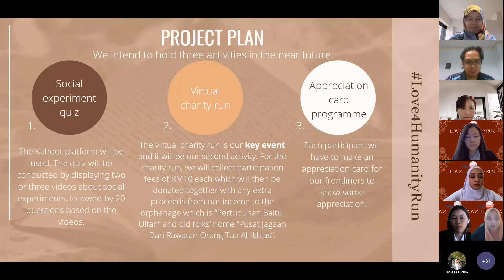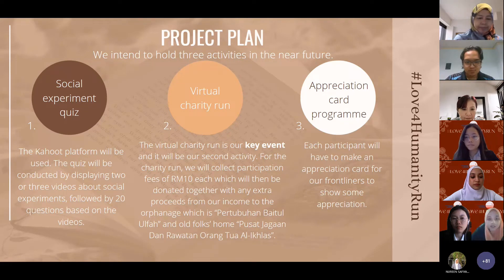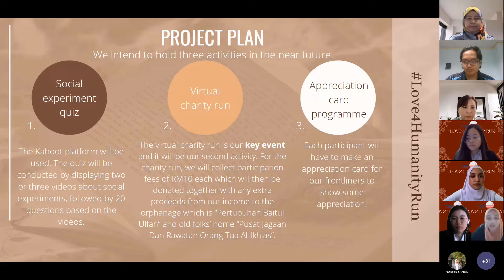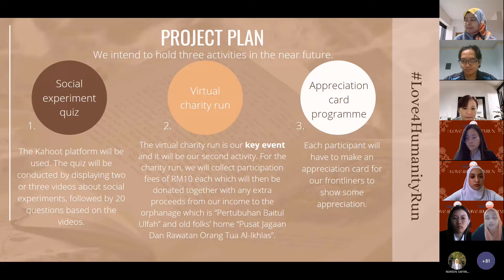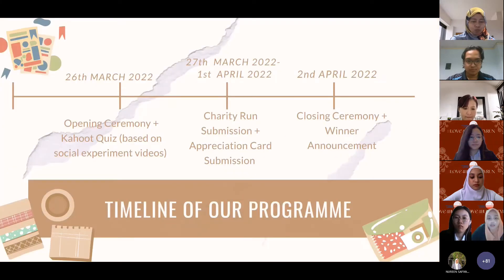Our project plan covers three activities. For the social experiment quiz, participants answer 20 Kahoot questions based on a video presented on that day. For the main program, the virtual charity run, the specific distance is five kilometers, where everyone who participates needs to pay RM10, and the money will be donated to Pertubuhan Baitul Ulfa, an orphanage, and Pusat Jagaan dan Rawatan Orang Ikhlas. For the appreciation card, each participant has to make one to show appreciation to our frontliners.